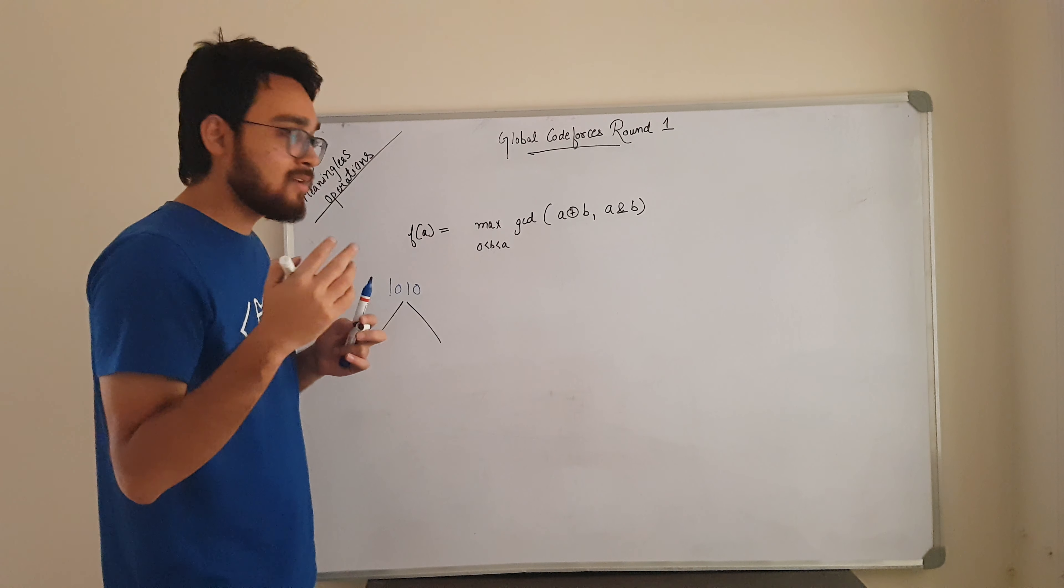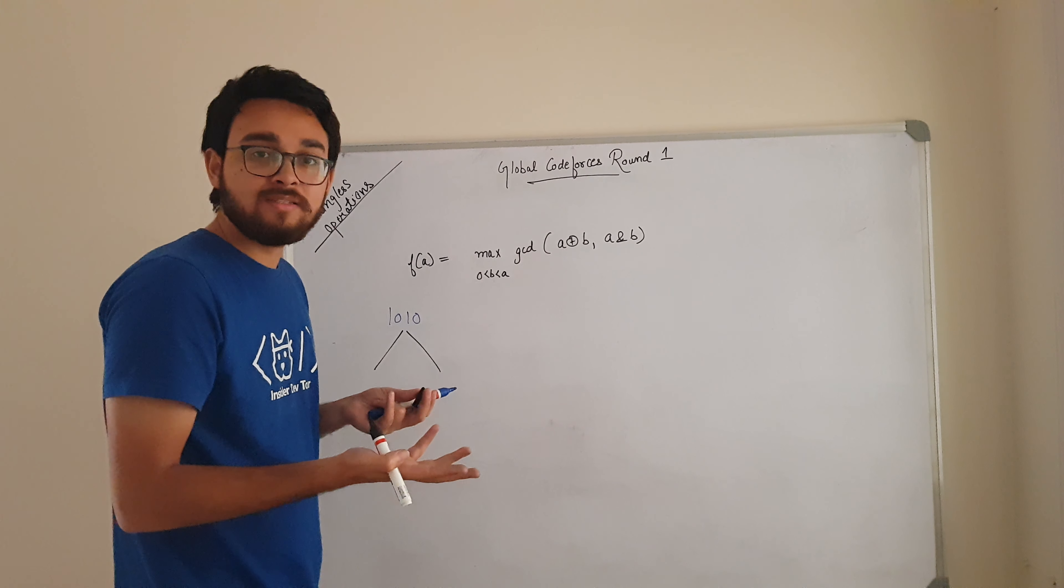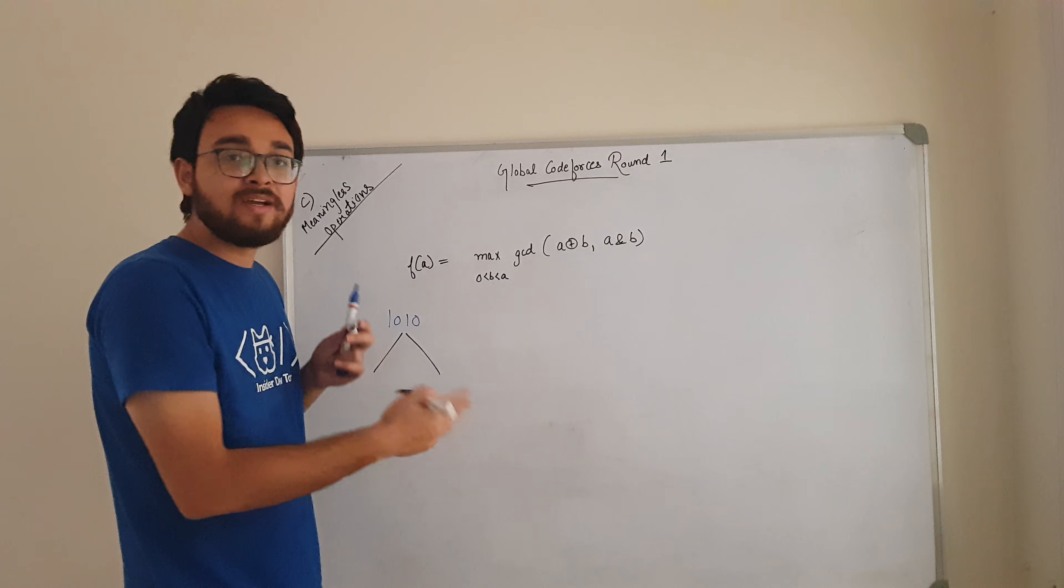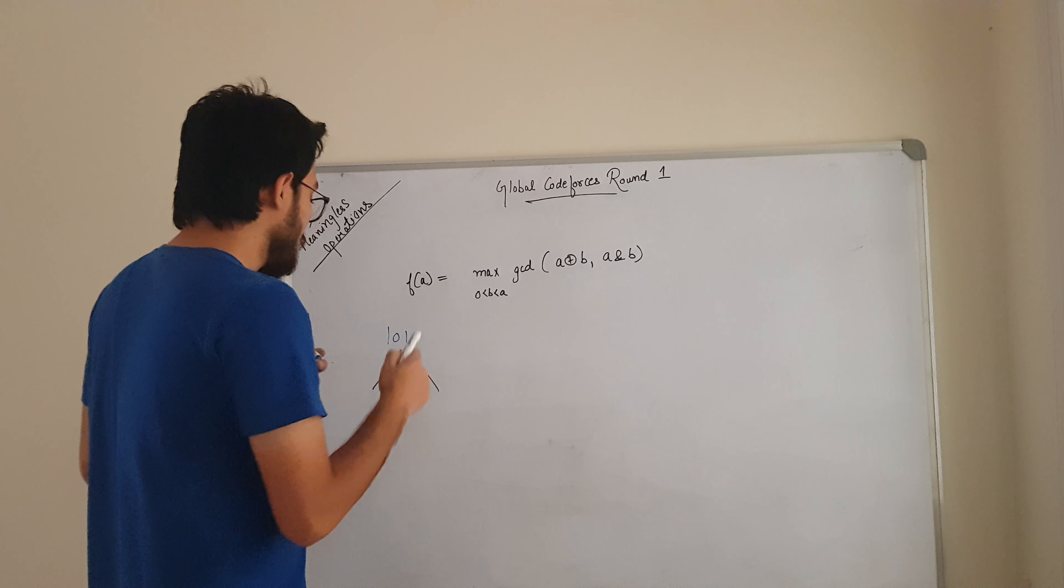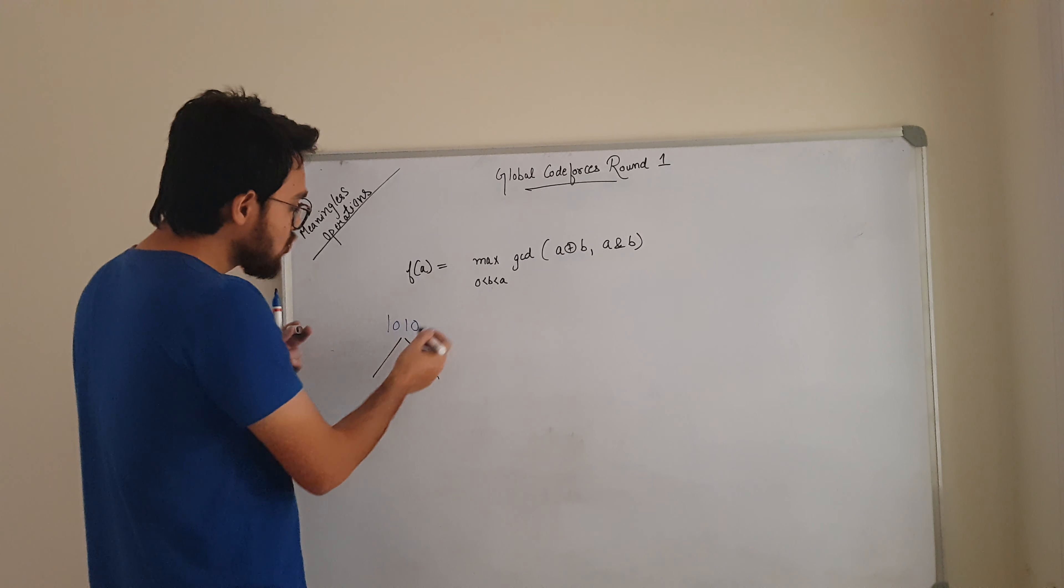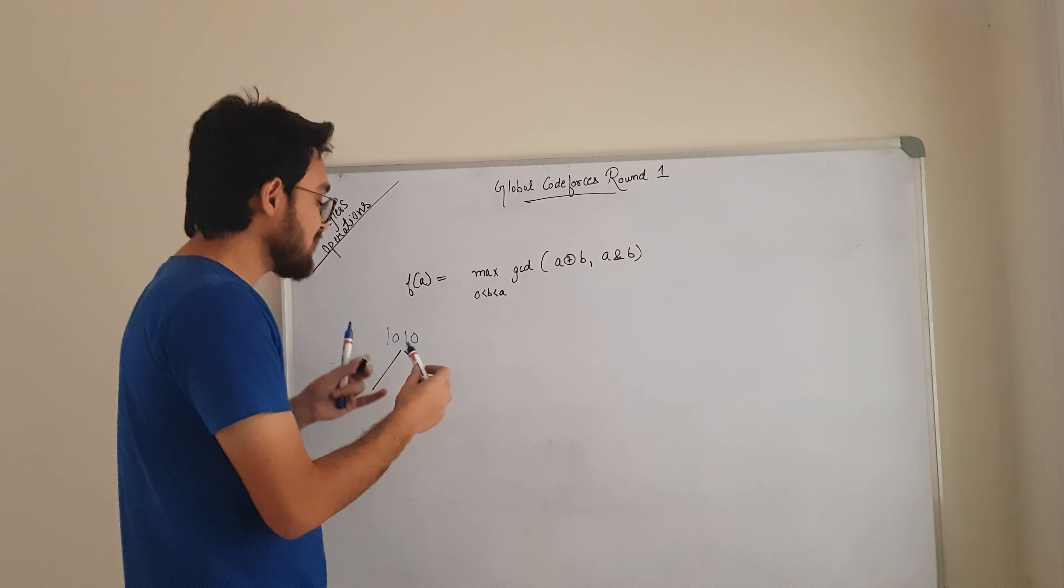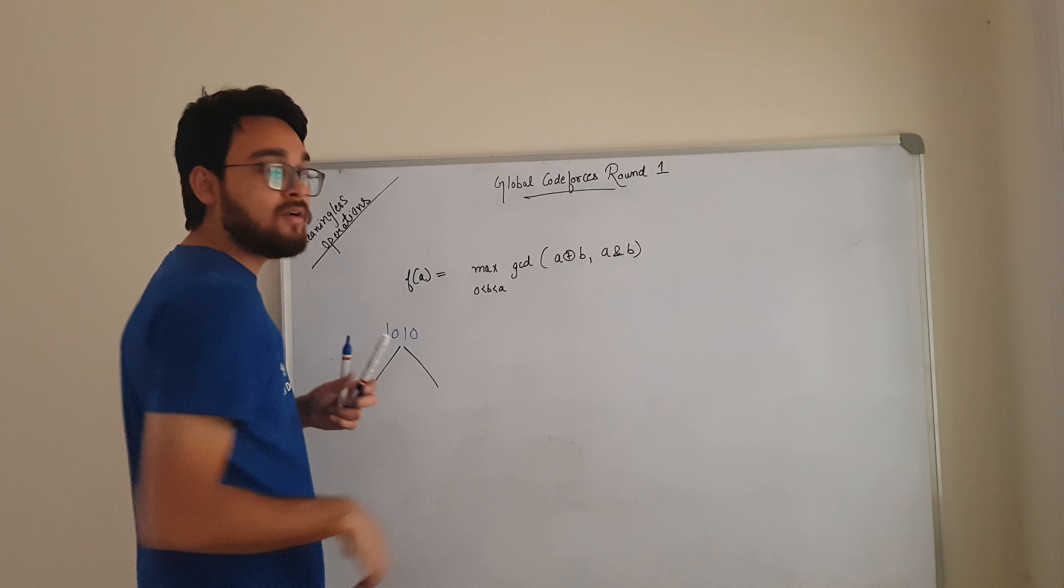To maximize this GCD, what we can think of is, we can change one number to all zeros and the other number to all ones such that the GCD will turn out to be all ones. We can't have a GCD greater than that. So what number will we choose such that we can make this number into all zeros in one operation and all ones in another operation.